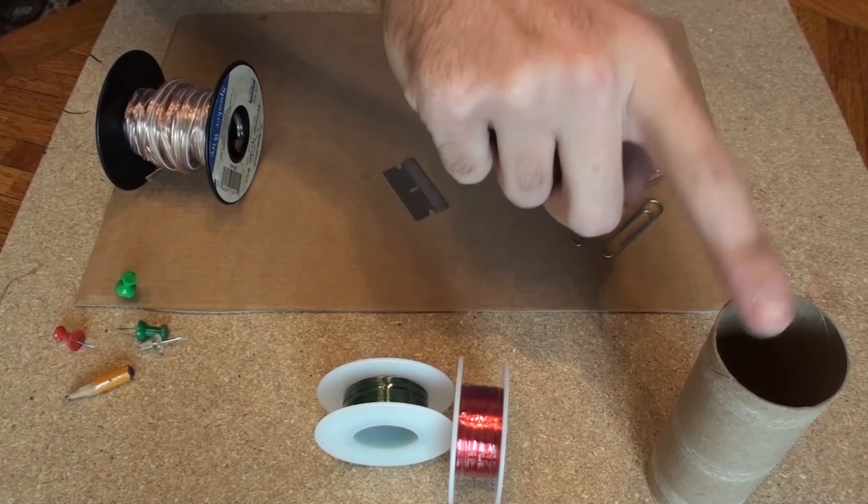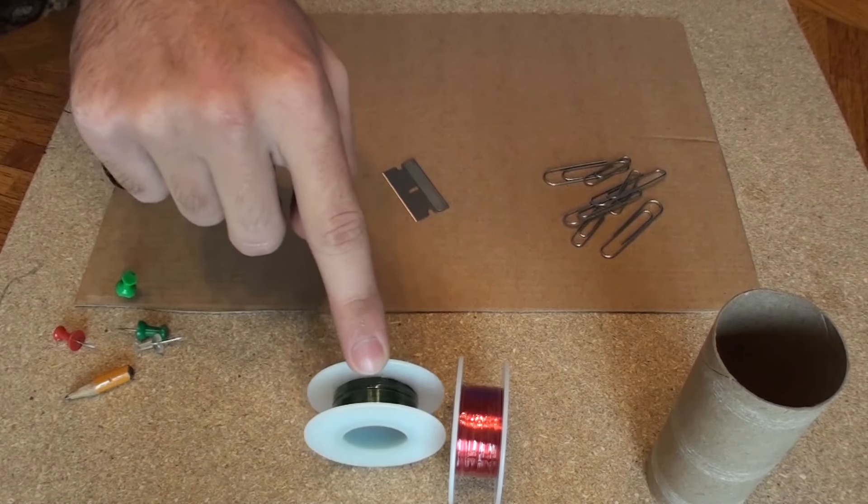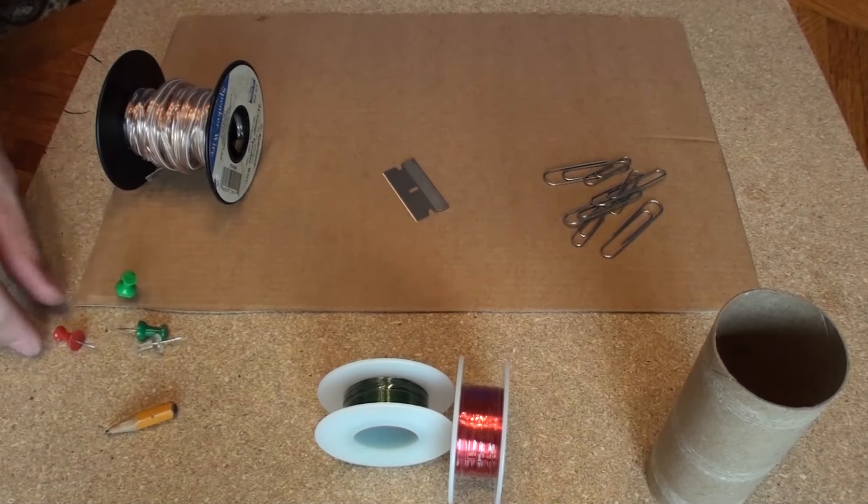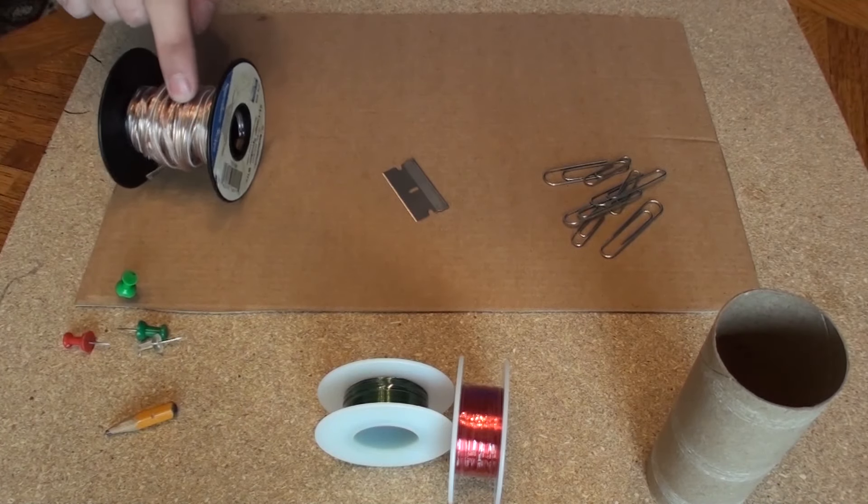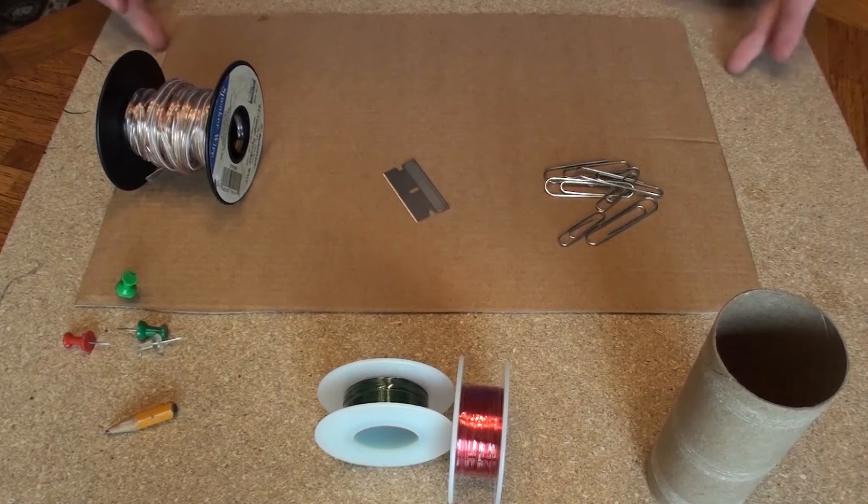So what you'll need for this project is a toilet paper tube, some magnet wire, which is just regular wire with a non-conductive coating on it, a broken off pencil head, some thumbtacks, some regular wire, a razor blade, and some paper clips and something to mount it all on, either cardboard or corkboard.